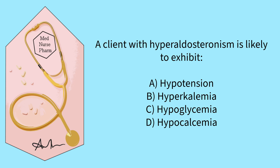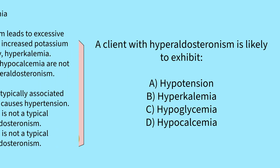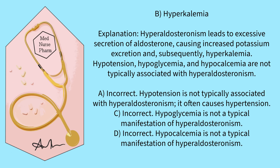A client with hyperaldosterism is likely to exhibit: A) hypotension, B) hyperkalemia, C) hypoglycemia, D) hypocalcemia. Pause the video and select your answer. The correct answer is B, hyperkalemia. Hyperaldosterism leads to excessive secretion of aldosterone, causing increased potassium excretion and subsequently hyperkalemia. Hypotension, hypoglycemia, and hypocalcemia are not typically associated with hyperaldosterism.